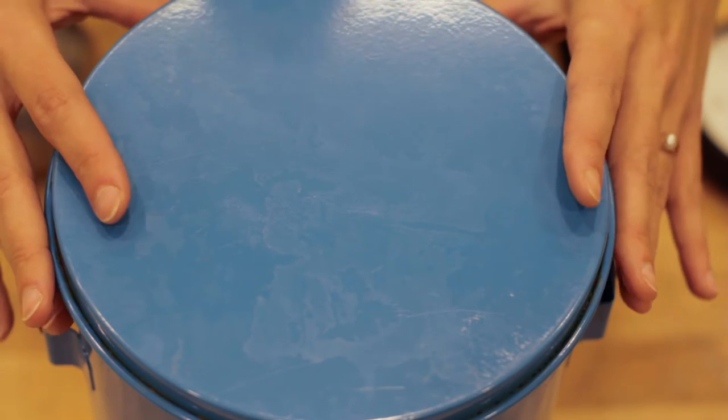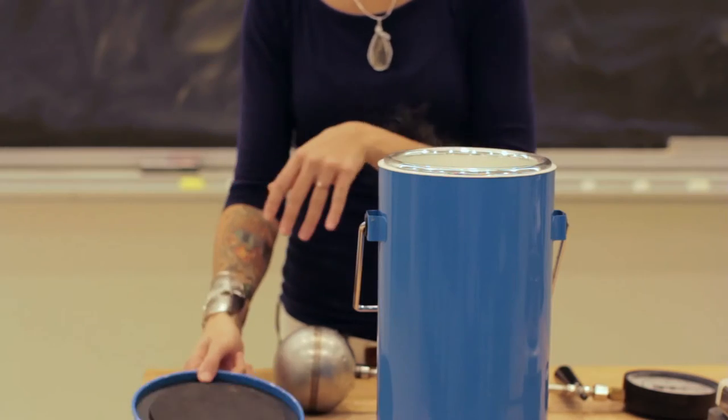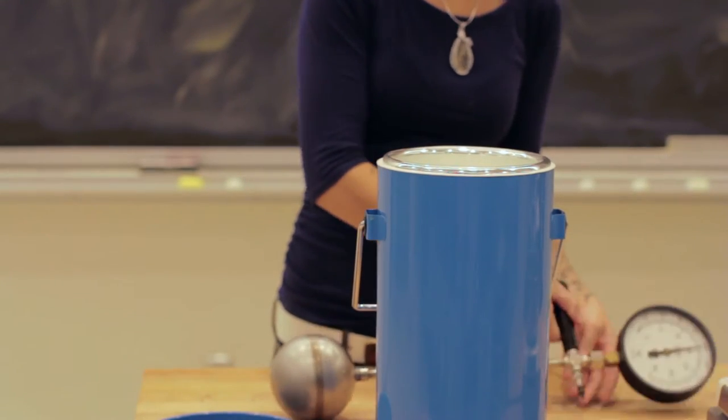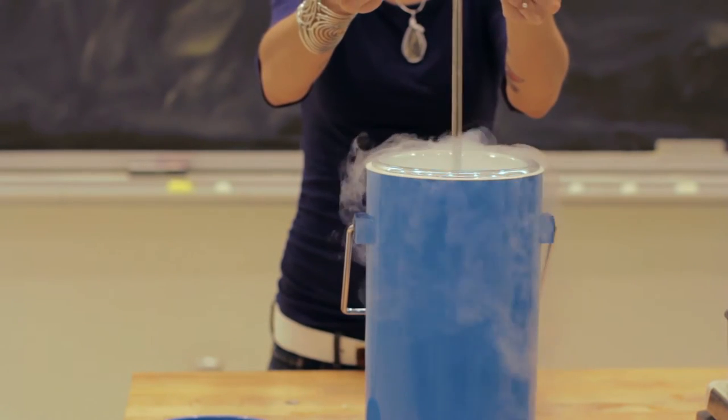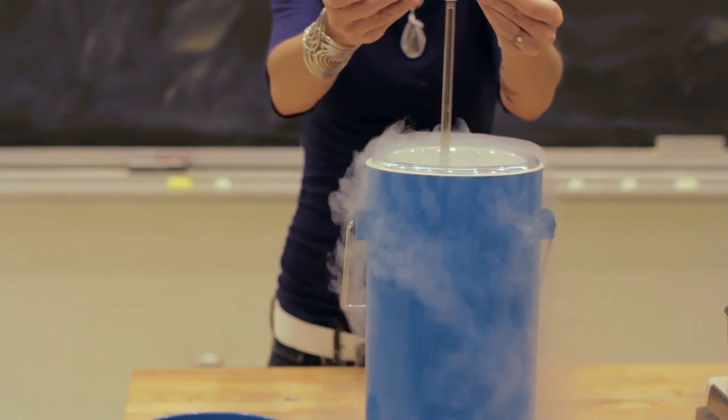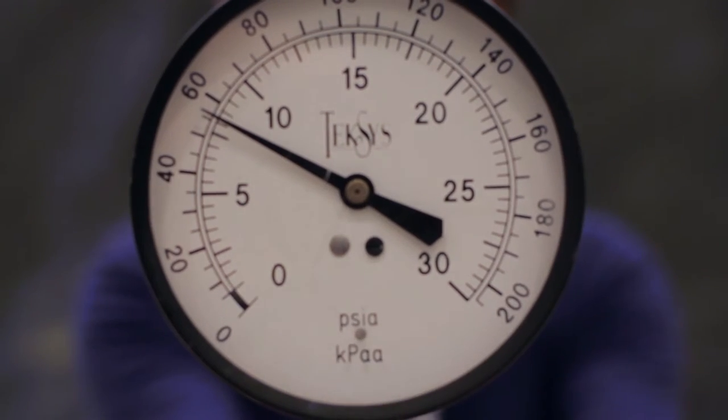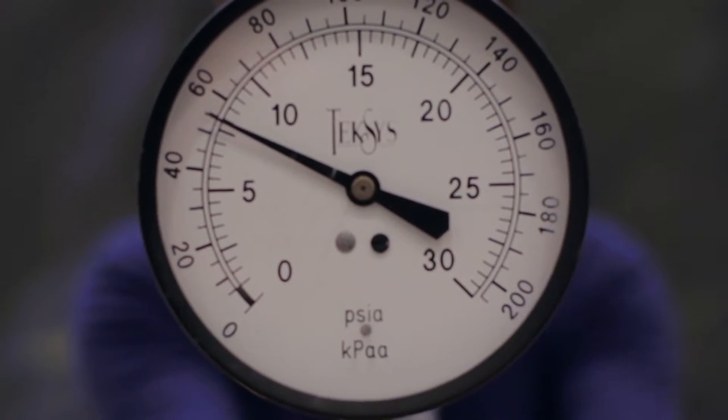Lastly, we place the bulb in liquid nitrogen, which boils at negative 196 degrees Celsius. We allow the gas in the bulb to reach negative 196 degrees Celsius and read off a pressure of 33.5 kilopascals.